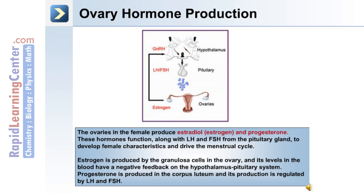Estrogen and progesterone, along with LH and FSH from the pituitary gland, function to develop female characteristics and drive the menstrual cycle. Estrogen is produced by the granulosa cells in the ovary, and its level in the blood has a negative feedback on the hypothalamus-pituitary system. Progesterone is produced in the corpus luteum and its production is regulated by LH and FSH.